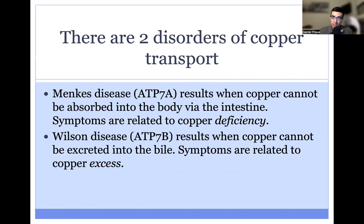There are two disorders of copper transport. The first is Menke's disease, which is due to ATP7A loss-of-function variants. The key thing to keep in mind about Menke's disease is that the symptoms are due to copper deficiency, and that's in contrast to Wilson disease, where the symptoms are related to copper excess.